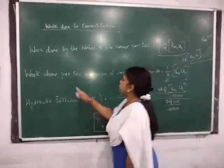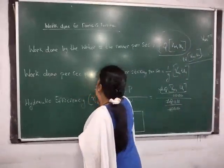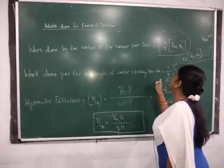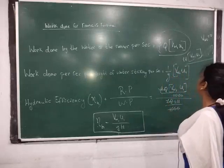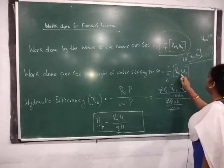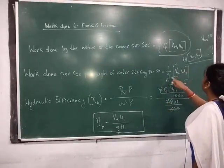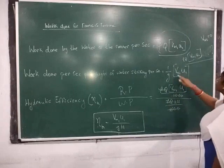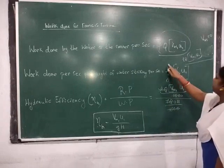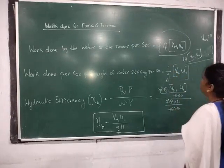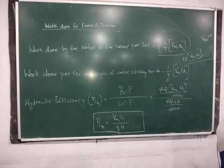Next is work done per second per weight of water striking per second. Here also, since V_W2 is 0, we get (1/g) into V_W1 into U1.